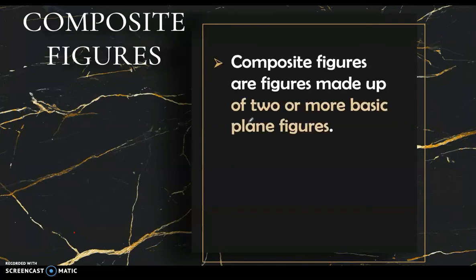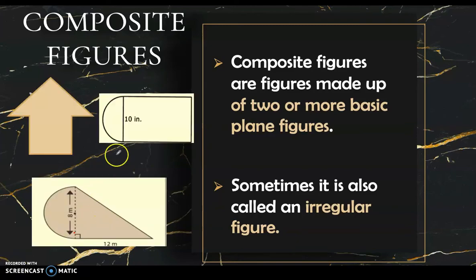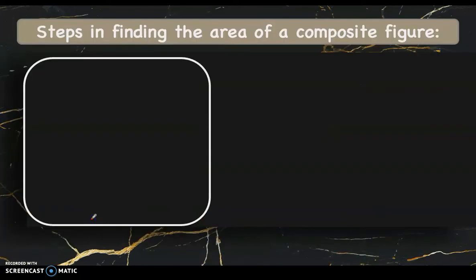We're going to discuss composite figures. These are figures made up of two or more basic plane figures, and sometimes called irregular figures. For example, this figure is made up of a triangle and a square; this one is a rectangle and a semicircle; and this one is a triangle and a semicircle. To find the area of a composite figure, it's very important that we know the formula for the area of basic shapes, which we discussed in our last video.